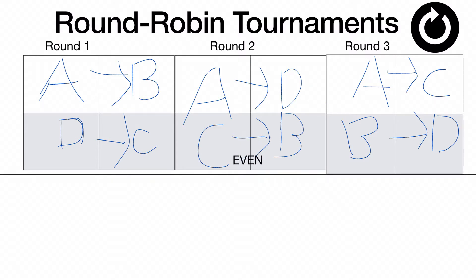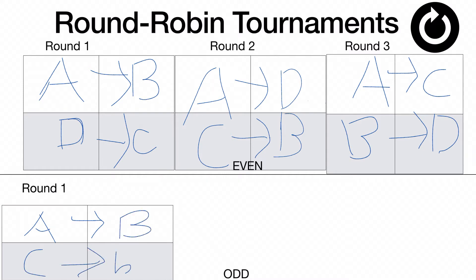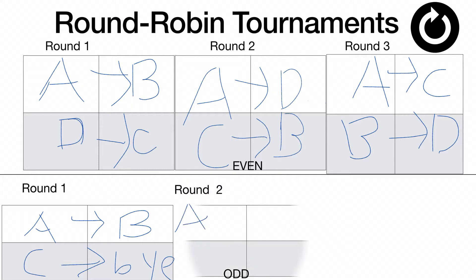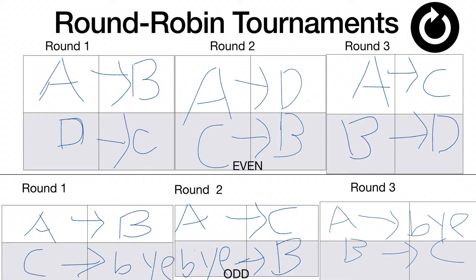How about an odd number of players? Let's choose three. We can see that we can't have all the players have an opponent, so we will have to give a bye to one player in every round. Let's say A and B get paired with each other and C gets a bye. The triangle rule can still be applied, and in the next round A will be paired with C and B will get a bye. You can probably figure out the next round easily. That's basically a basic explanation of how the pairings can work.